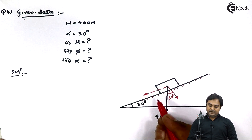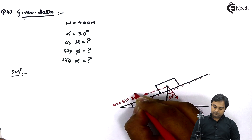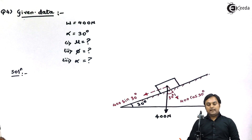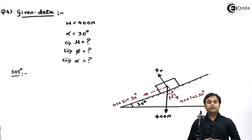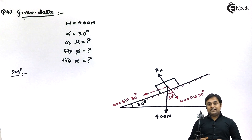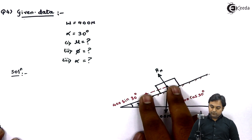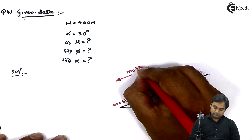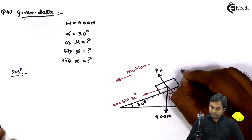The load component parallel to the plane is 400 sin 30 degrees, and perpendicular to the plane is 400 cos 30 degrees. Opposite to 400 cos 30 degrees, there is the normal reaction. Since the block is sliding down due to the component 400 sin 30 degrees, motion is down the plane. Therefore, friction force is opposite to motion — friction acts up the plane.